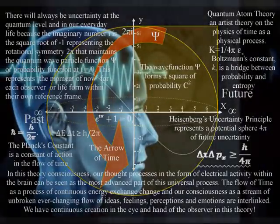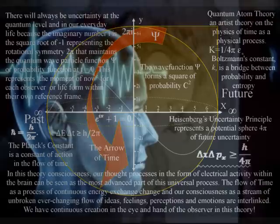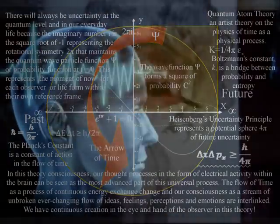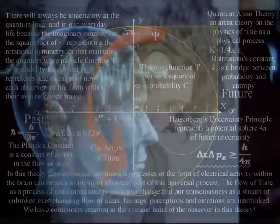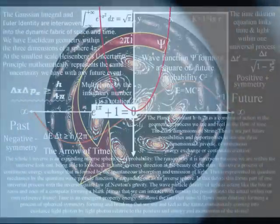The flow of time as a process of continuous energy exchange and our consciousness as a stream of unbroken ever changing flow of ideas, feelings, dreams, hopes, perceptions and emotions are interlinked. In this theory each individual is at the forefront of creation in the moment of now within the centre of their own reference frame, being able to look back in time in all directions at the beauty of the stars.